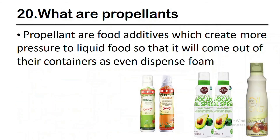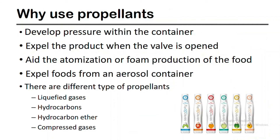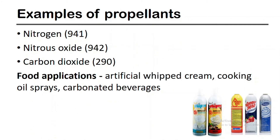Then, let's talk about propellants. Propellants are food additives which create more pressure on liquid food so that it will come out of their containers in an evenly dispensed form. They can develop pressure within the container and expel the product when the valve is opened. They aid the atomization or foam production of the food and expel foods from an aerosol container. There are different types of propellants such as liquefied gases, hydrocarbons, hydrocarbon ether, and compressed gases. Nitrogen, nitrous oxide, and carbon dioxide are some examples of propellants in the food industry.